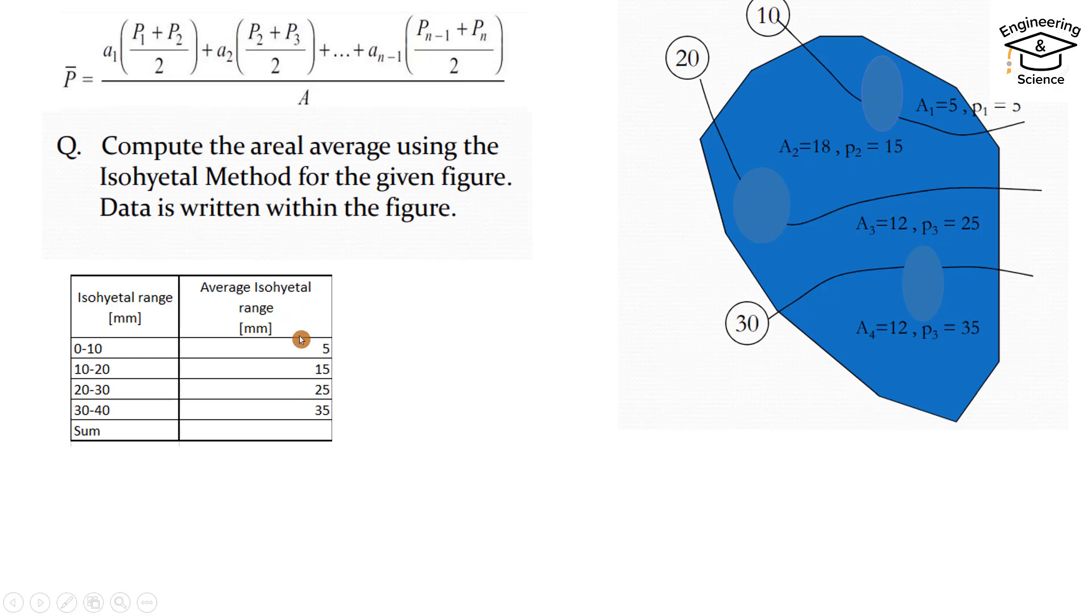Then we have to find average of the isohyetals. 0 to 10, average is 5. 10 to 20, average is 15. 20 to 30, average is 25. 30 to 40, average is 35. That is the average of isohyetal range or average precipitation.